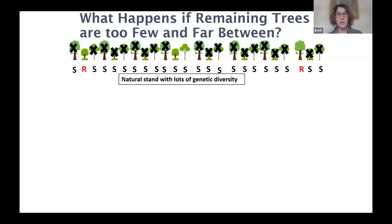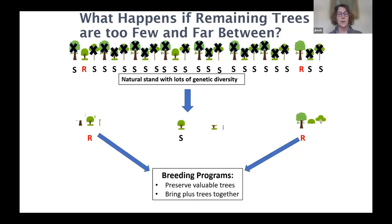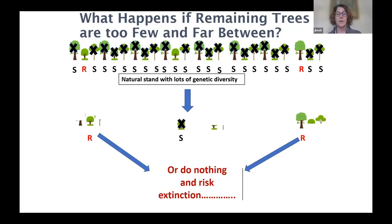As far as breeding programs go, those come into play when you want a consistent seed source that gives you a known amount of resistance — that's one reason. But it can also be an absolute necessity when you have incredibly damaging invasives that kill so many trees that after the selection event the surviving trees are so few and far between that there's no way they'll be able to cross-pollinate. Without breeding programs to preserve these valuable trees and bring them together, you're going to face extinction of that species.